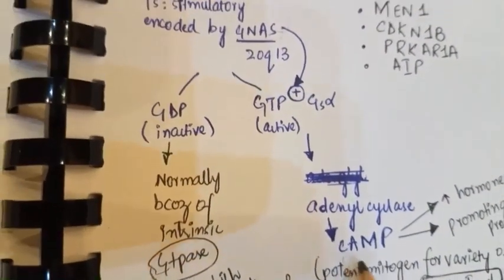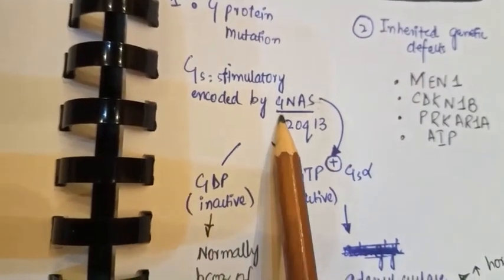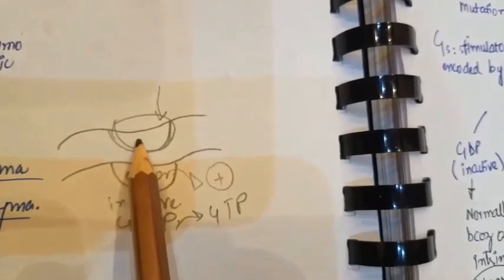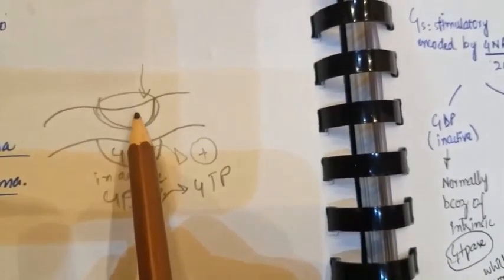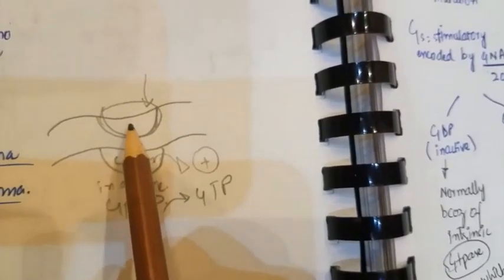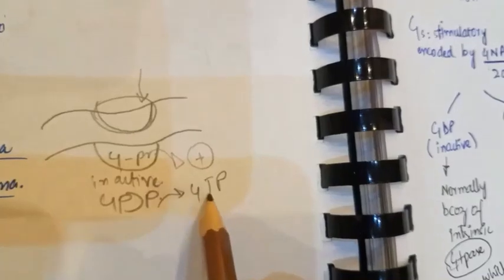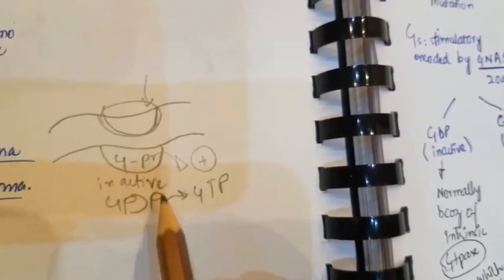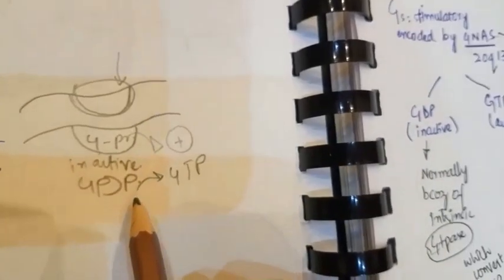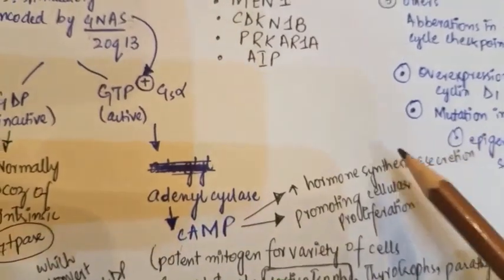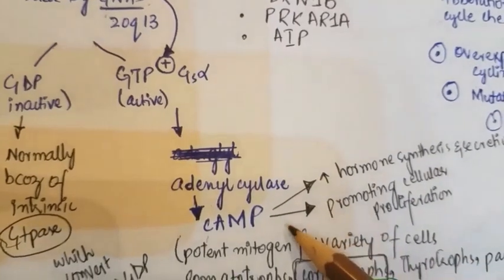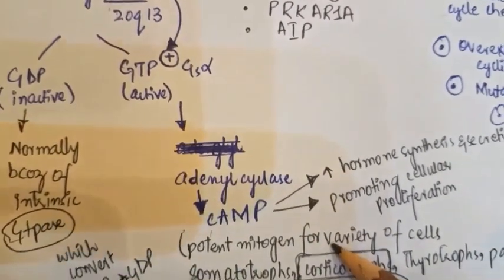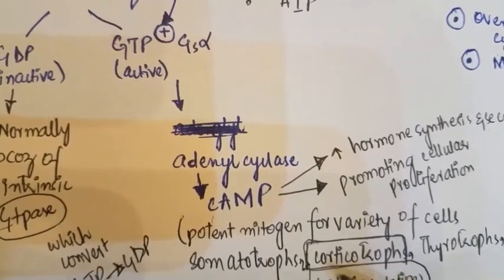When there is a mutation, there is no need for the ligand to bind to the receptor. In the absence of ligand and in the absence of GTP conversion, this G protein will still ultimately be activated. As a result, adenyl cyclase will increase hormone synthesis and secretion and promote cellular proliferation. Cyclic AMP is a potent mitogen for corticotrophs, somatotrophs, and thyrotrophs.